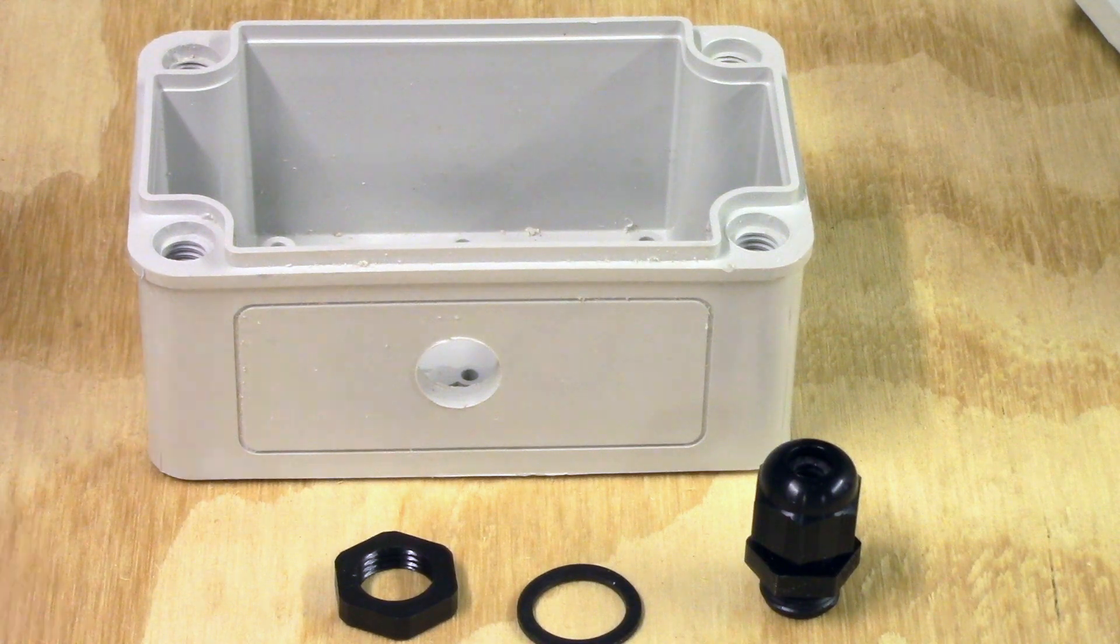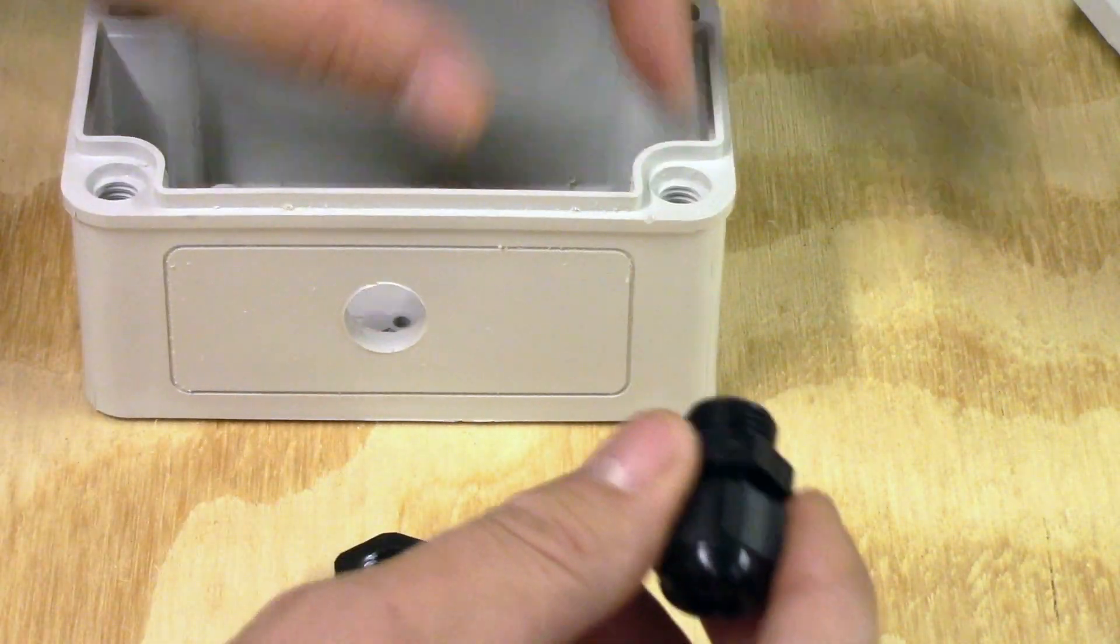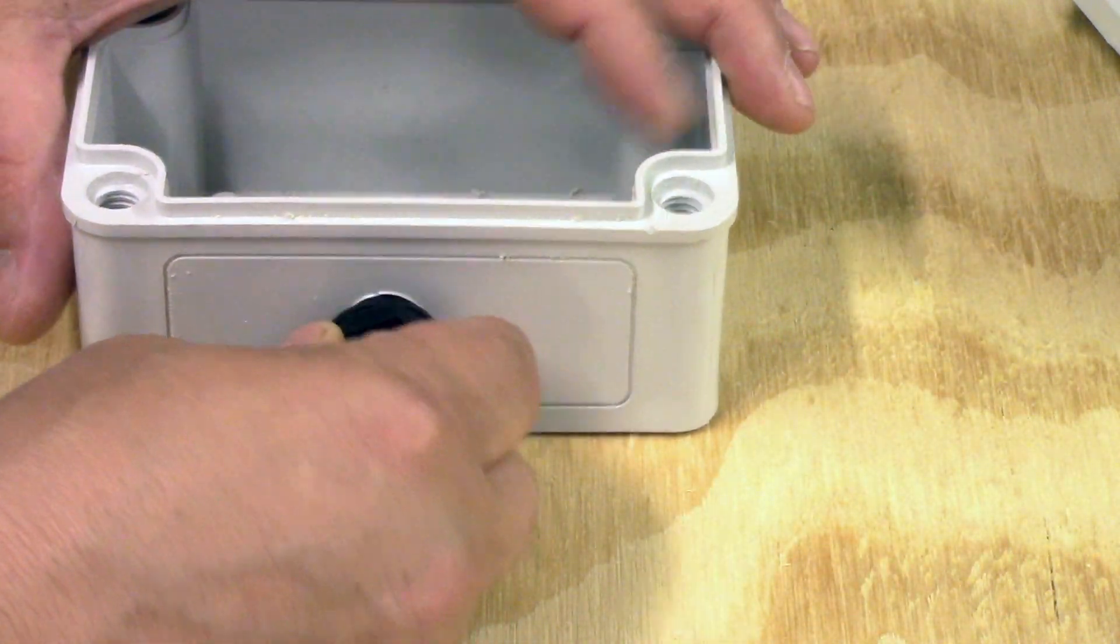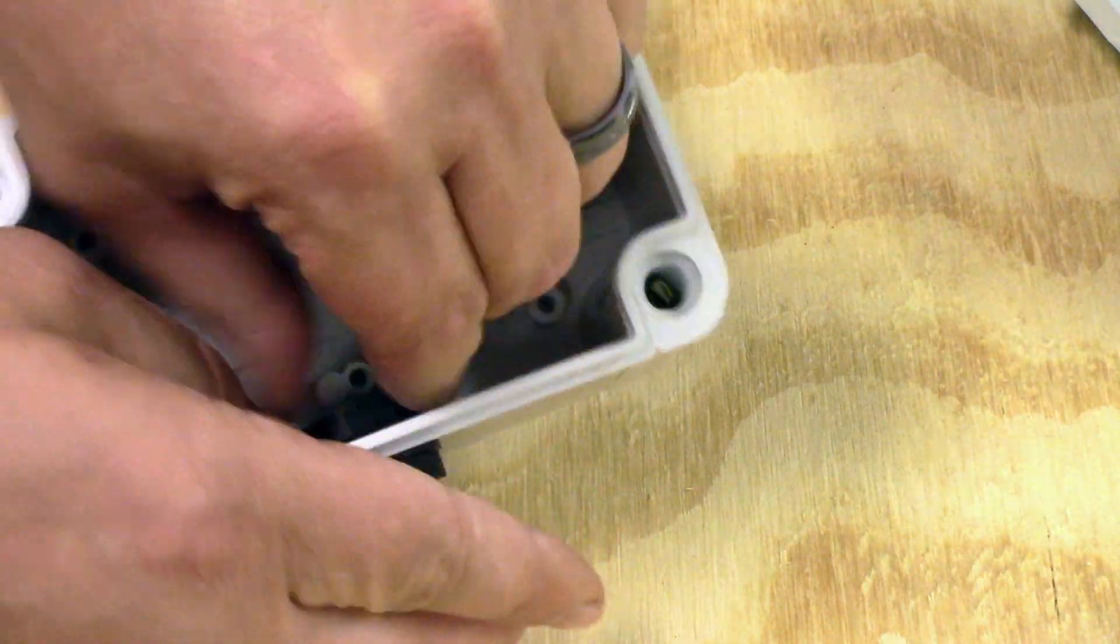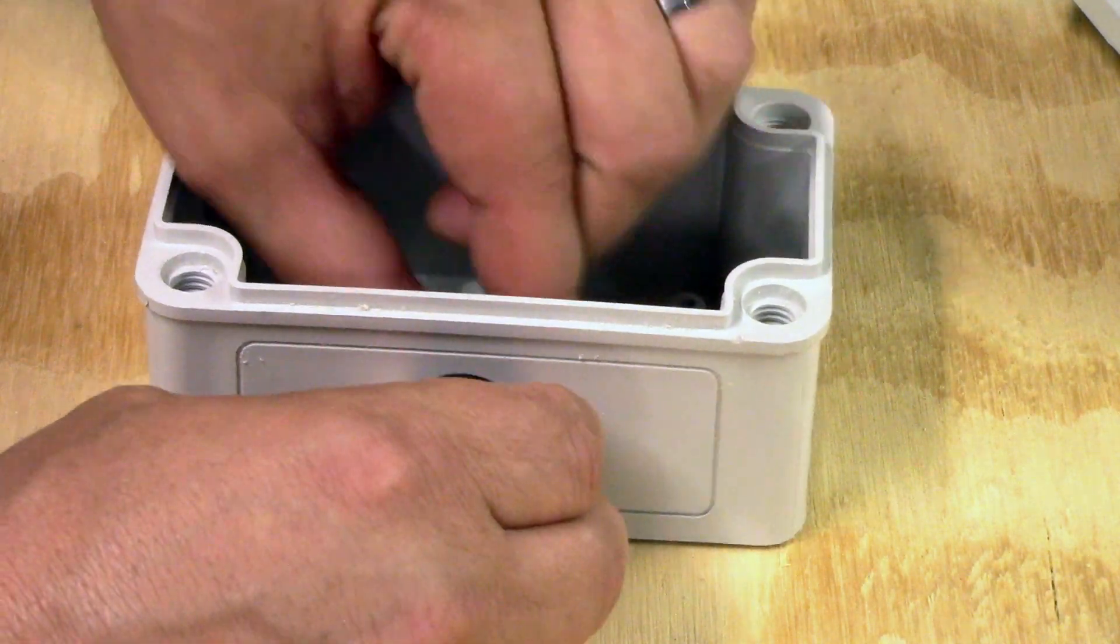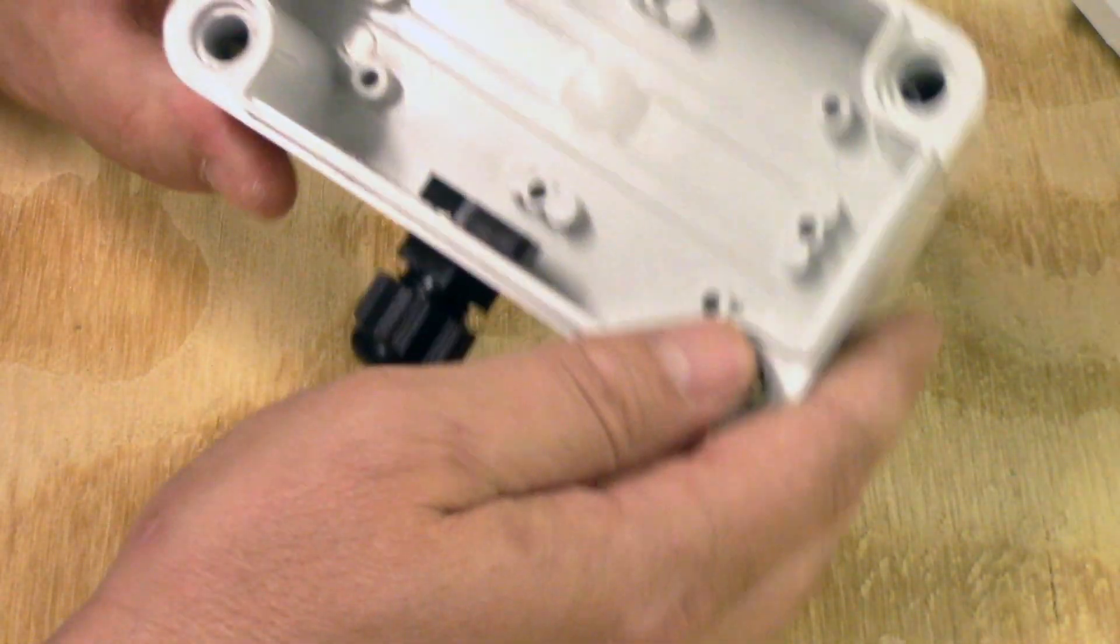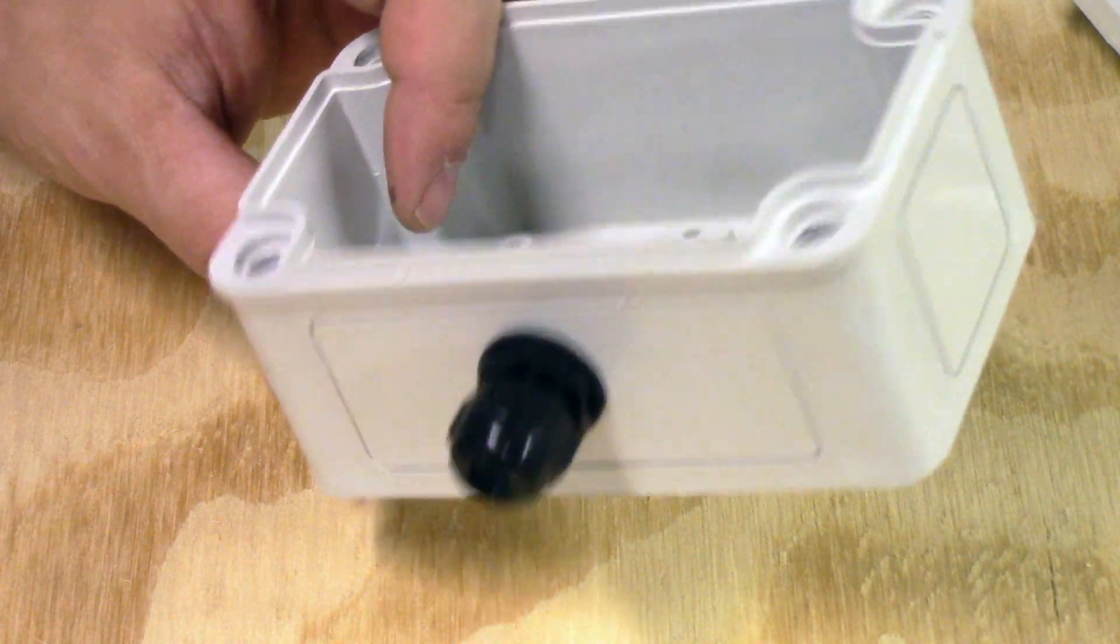Next we just insert the cable gland through the hole but we have to have the seal on it. So put that on, put it through there and then put the lock nut on the inside, snug it up and there. Now our box is ready to have the cable coming out of it through a weatherproof outlet.